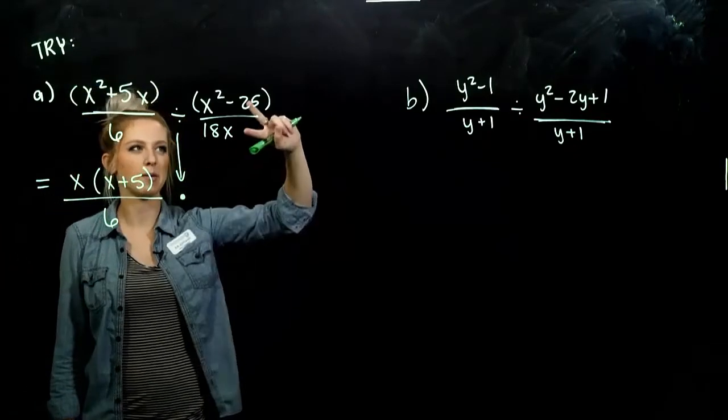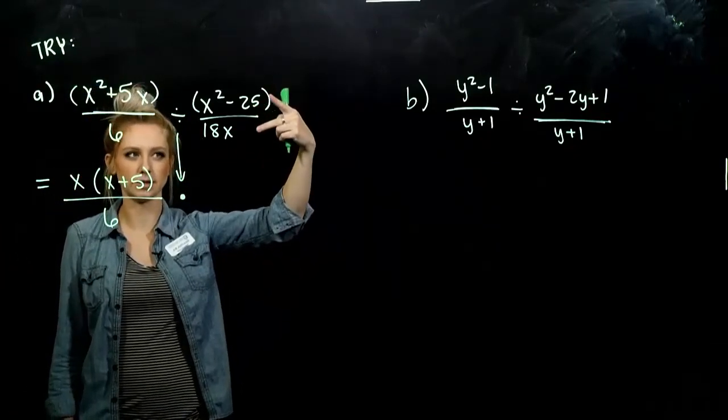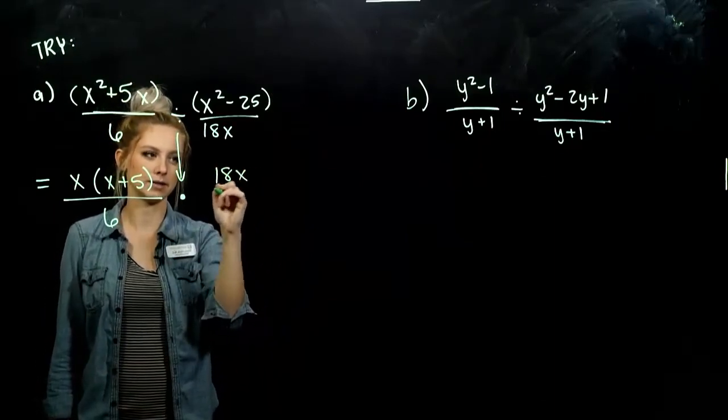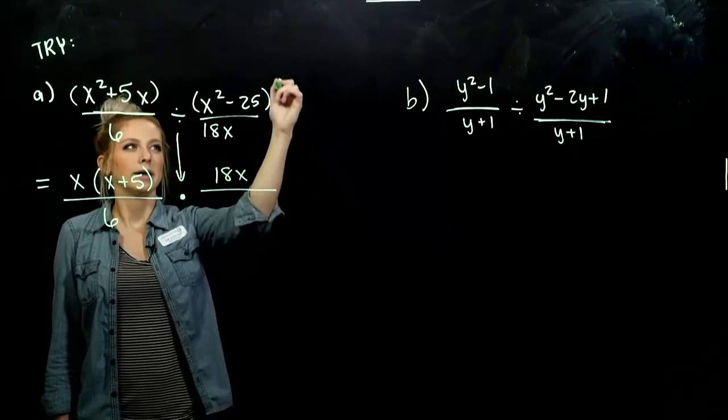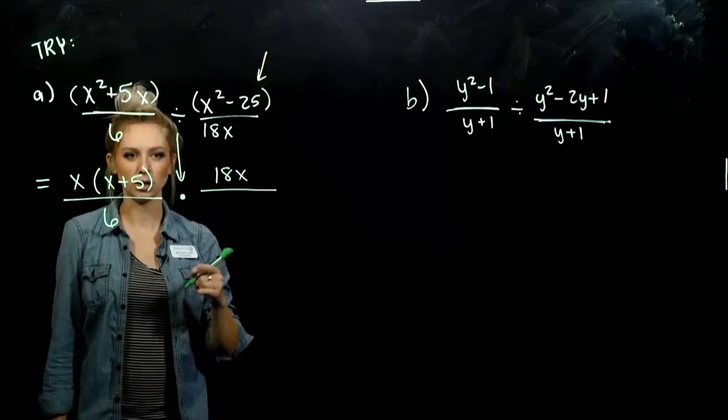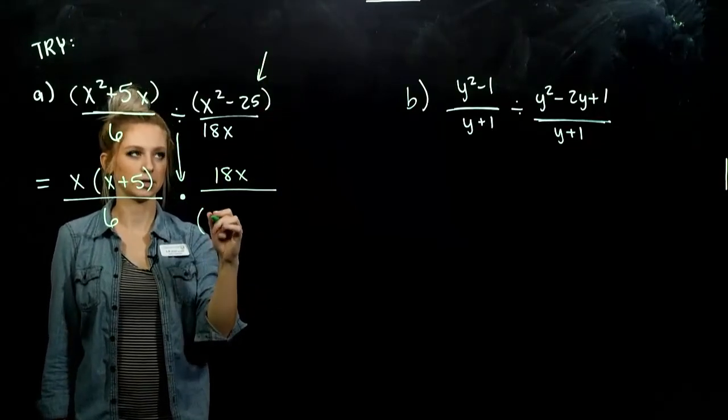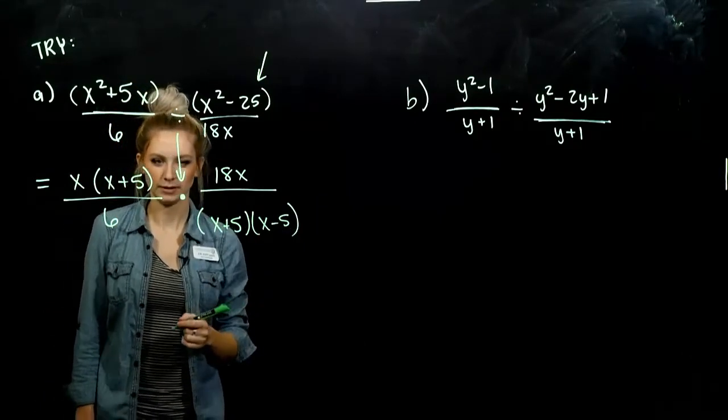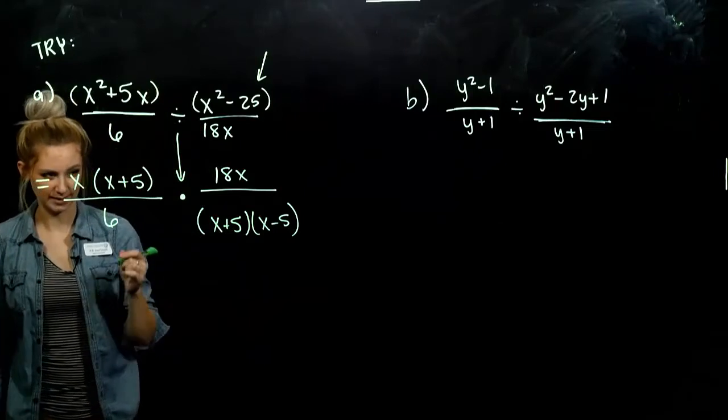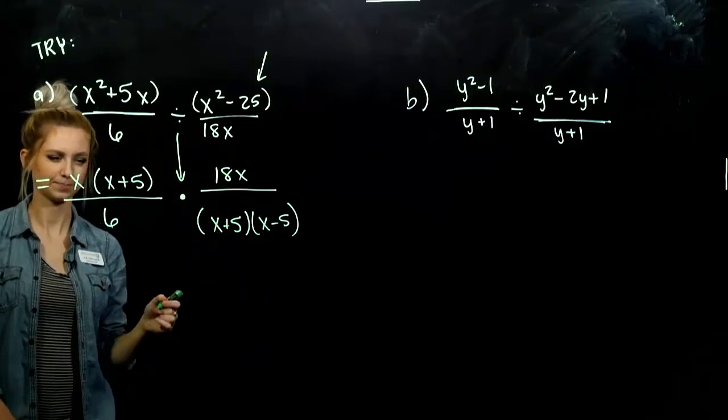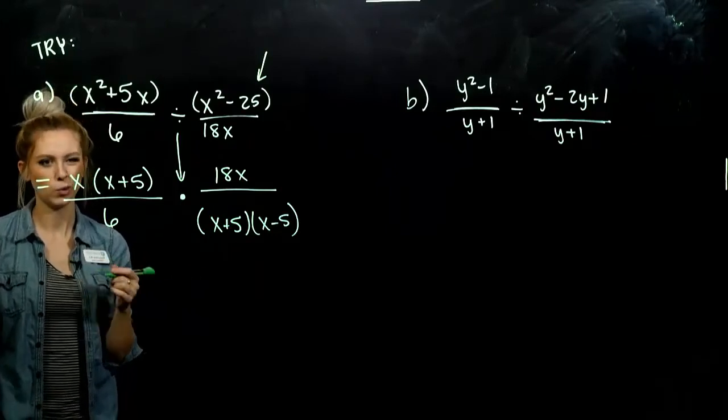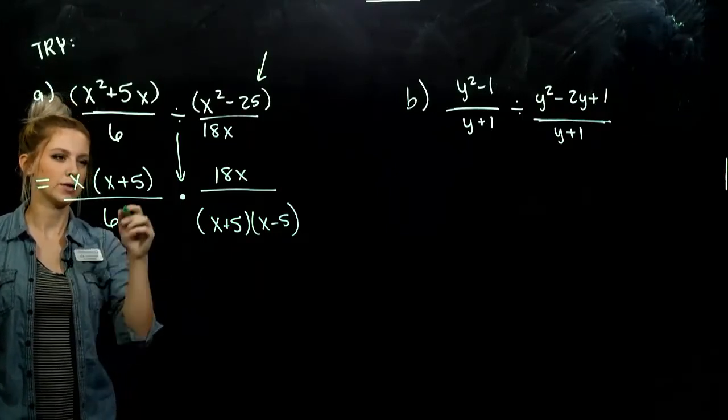So I need to multiply by the reciprocal of this thing. Flipping it upside down. So now 18x lives up top. And this binomial lives down below. And how does it factor? x plus 5 and x minus 5. So now we can look. See if anything cancels. And eventually multiply. You could multiply it all together now. Order doesn't really matter.